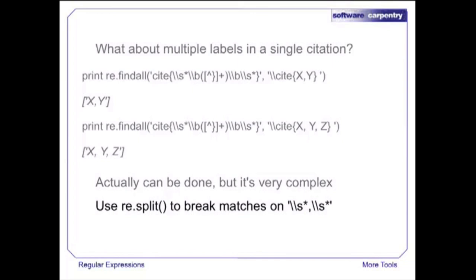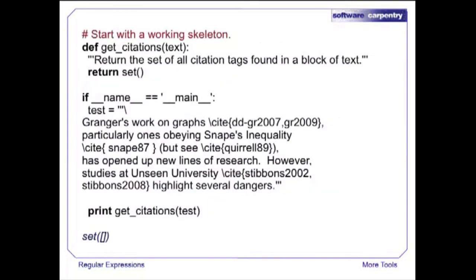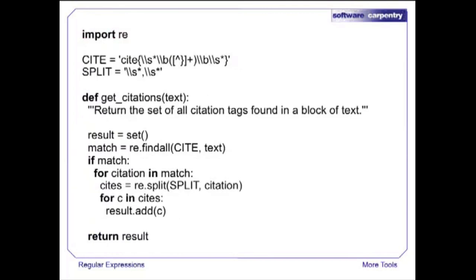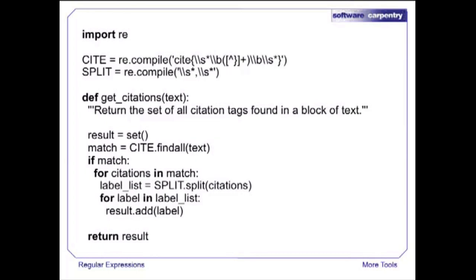The best way to show re.split in action is to write the function we originally set out to create. We start with a skeleton including test data, a stub function, and calls that display the result. Now let's write the function: for readability, we put our patterns at the top with memorable names. Inside the function, we pull out all citations using the first pattern, then split each result everywhere there's a comma with optional spaces, stuff all results into a set, and return that. If no matches were found, the set will be empty.